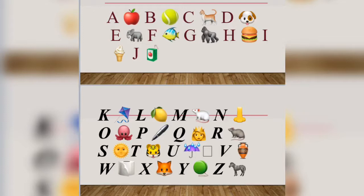I is for Ice Cream. E, E. Ice Cream. J is for Juice. J, J. Juice.